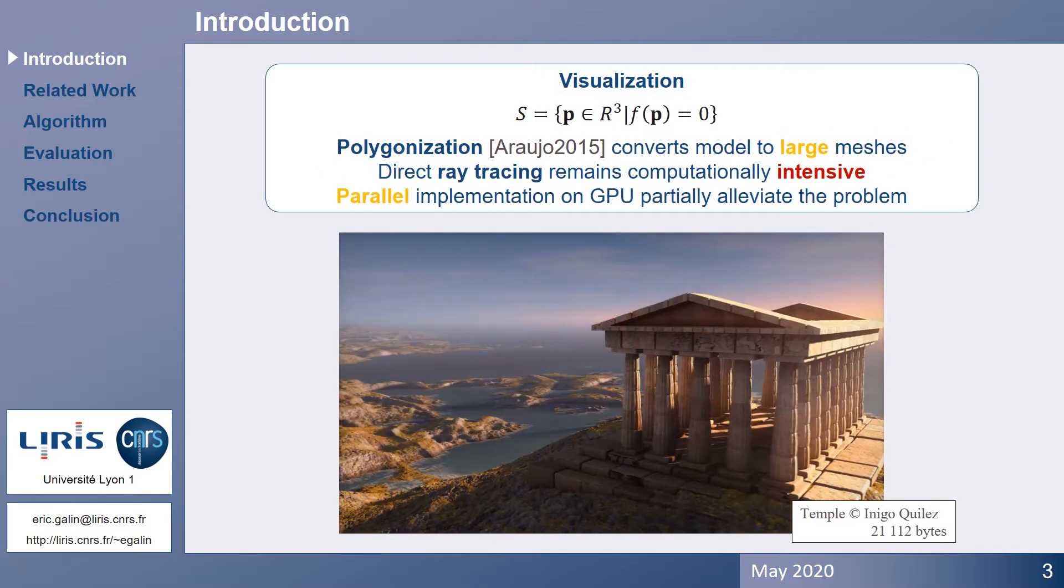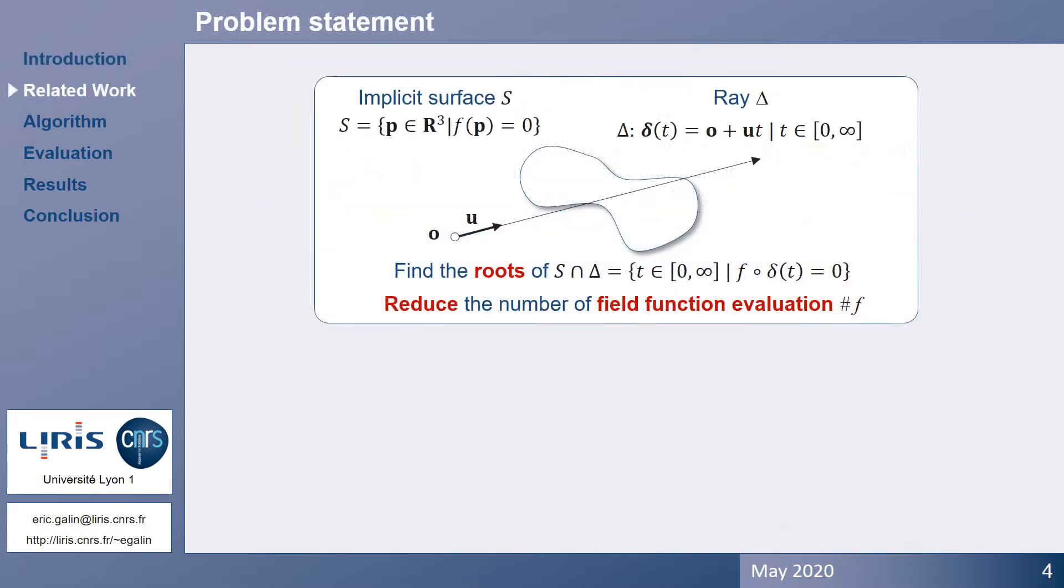While implicit surfaces are powerful for modeling elaborate shapes, visualization remains a computationally intensive process. Polygonization techniques convert implicit surfaces into triangle meshes, which are, in general, memory consuming compared to the otherwise compact implicit representation. Direct ray tracing is another option, but that's even more computationally demanding. Parallel implementations using graphics hardware partially alleviate the problem. Nevertheless, ray tracing needs many field function queries. In this presentation, we address the acceleration of ray tracing.